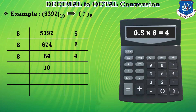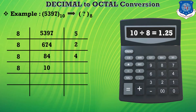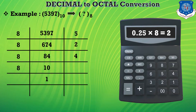In the next step, 10 is divided by 8 and we get the answer 1.25. Here 1 becomes the quotient and the remaining term is 0.25. Multiplying 0.25 by 8 we get remainder 2, and we place this 2 in the remainder position.